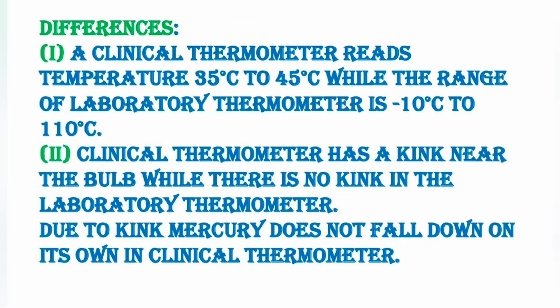The differences are: the clinical thermometer has a reading of 35 to 45 degrees Celsius, whereas the laboratory thermometer has a reading of 10 degrees Celsius to 110 degrees Celsius. The clinical thermometer has a kink, but there is no kink in the laboratory thermometer. Because of that kink, the mercury in the clinical thermometer does not fall back down.